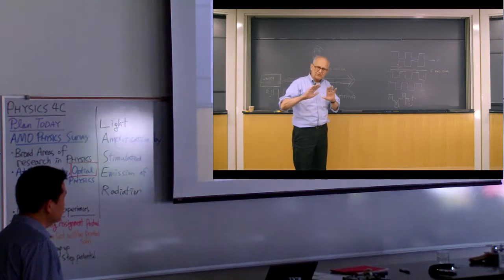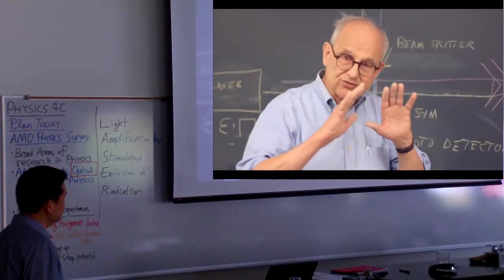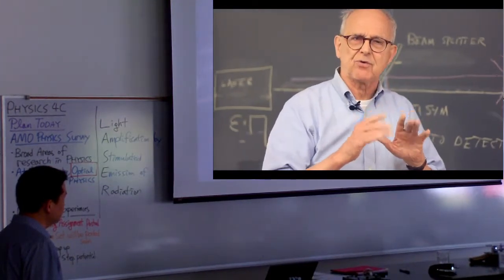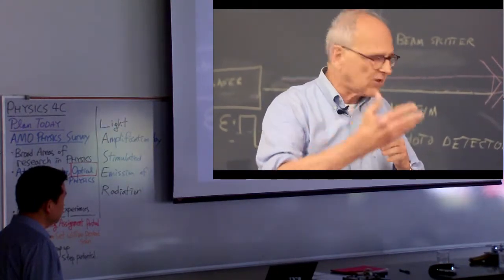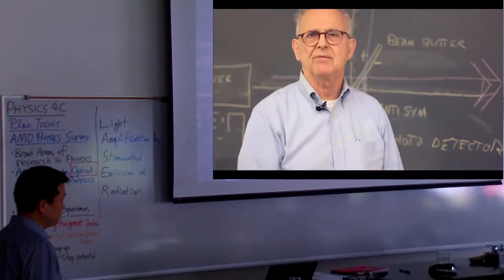A gravitational wave comes along. It destroys that difference between the two paths, so that we no longer have just zero light, we get light. And so we have converted the gravitational wave into an amount of light that appears at the photodetector. And that is the fundamental idea behind the measurement.